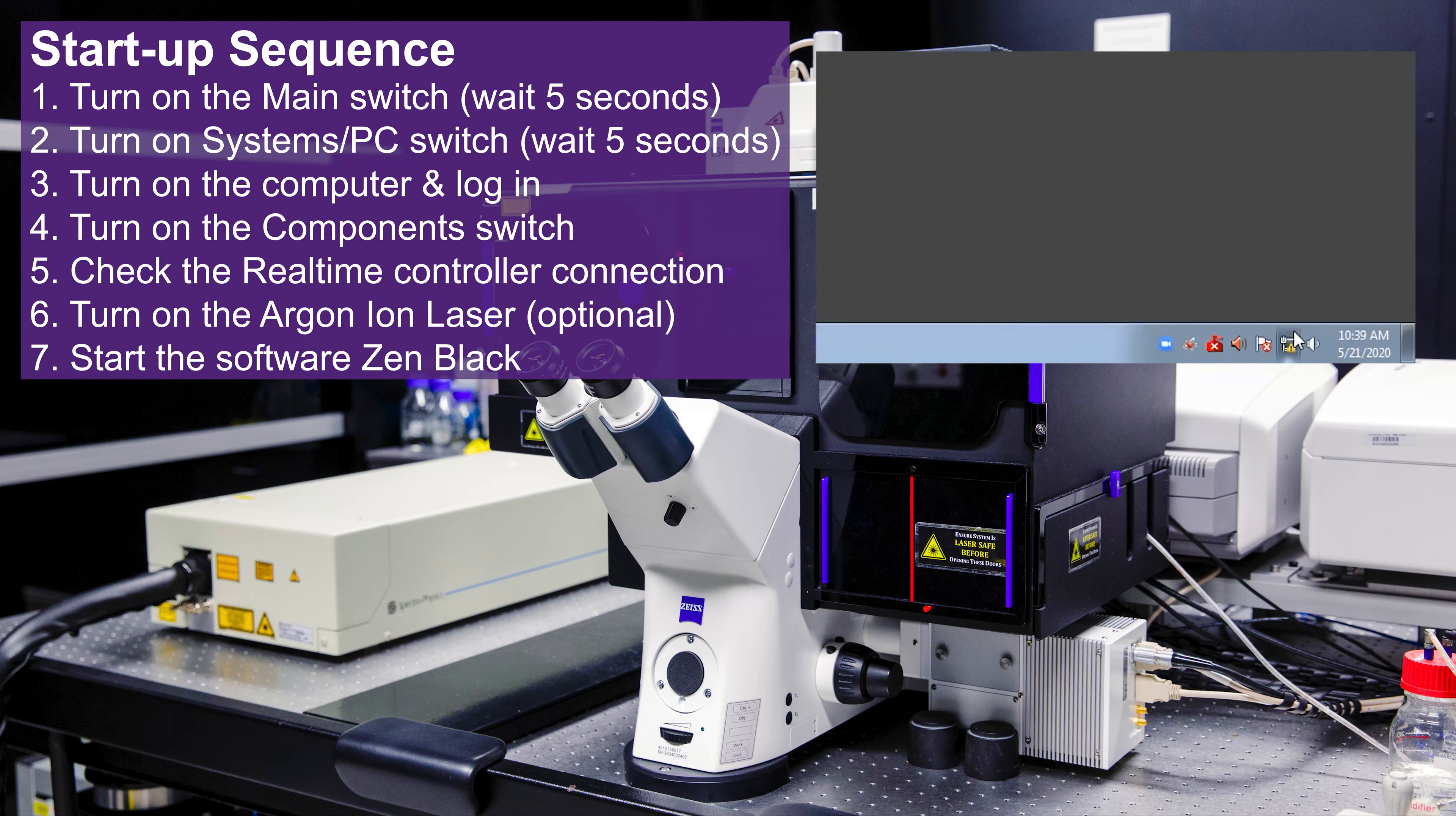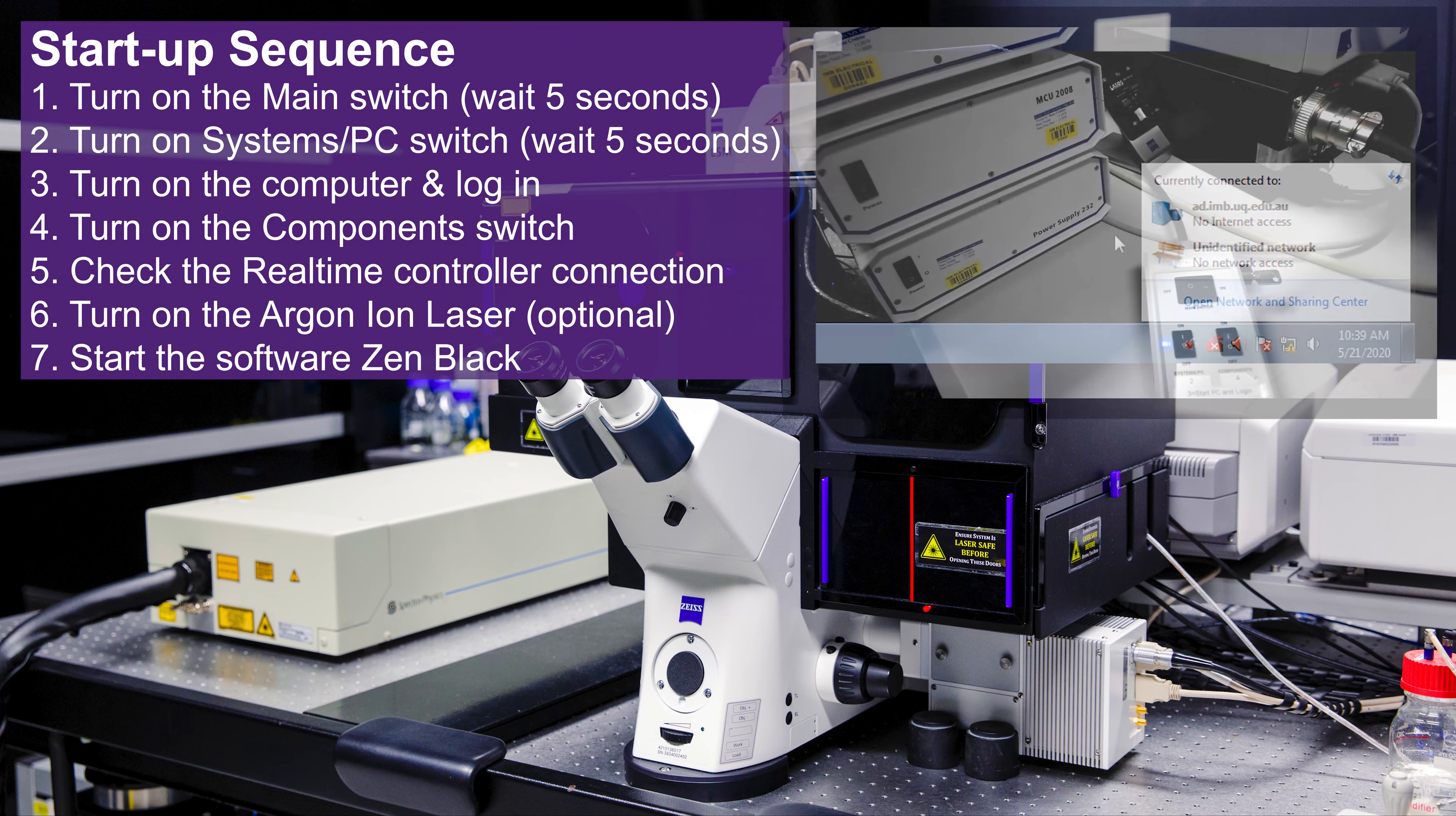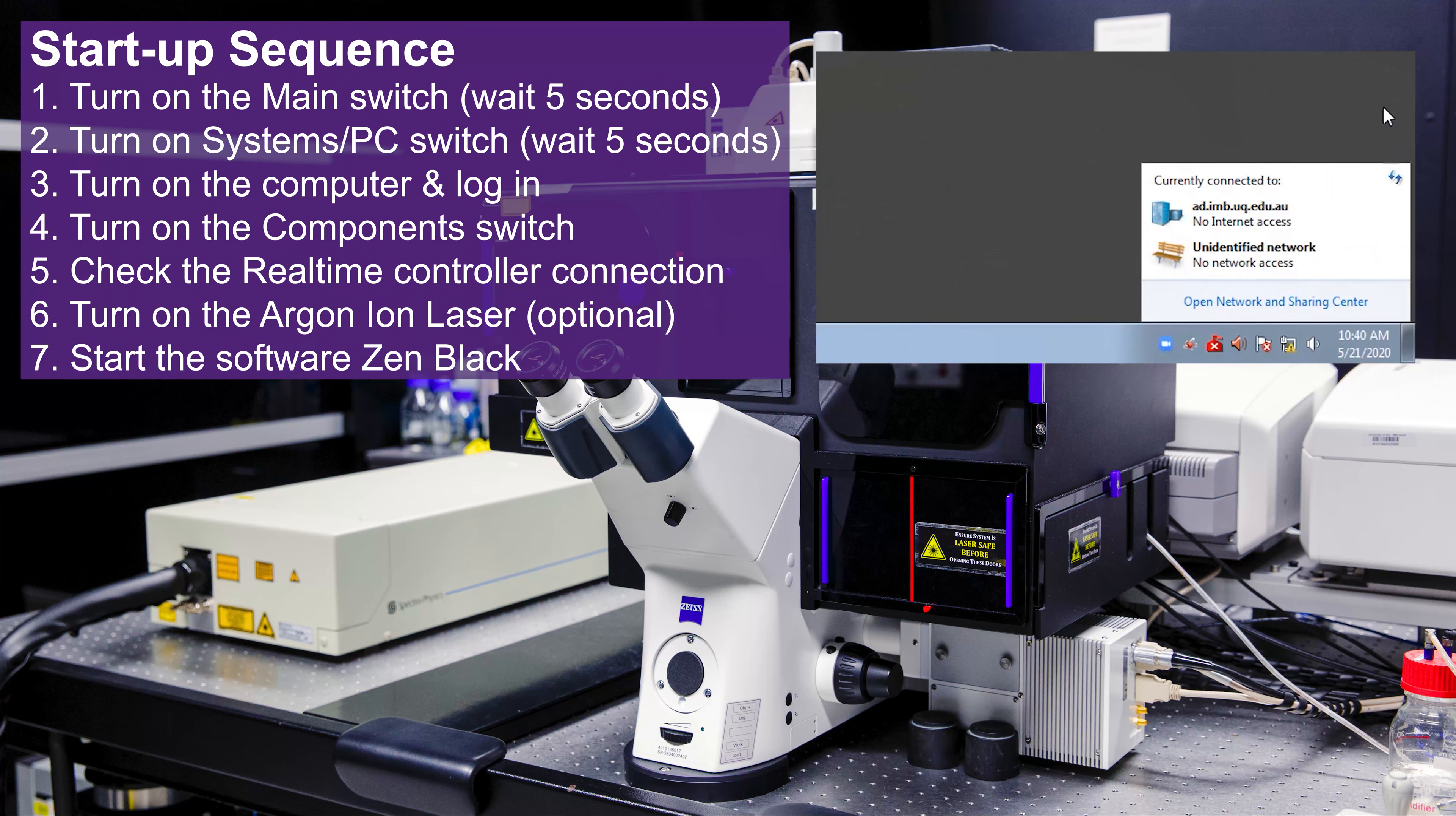You can check this by clicking on the network icon in the system taskbar near the clock. Note there will be two connections, one to the building network and one to the microscope. The microscope is the unknown network. If you don't see this unknown network, check the interlock key is horizontal on the main switch box. You may also see that it can take up to 30 seconds for the connection to stabilize between the computer and the real-time controller. You don't want to start the software until it stops disappearing and reappearing.